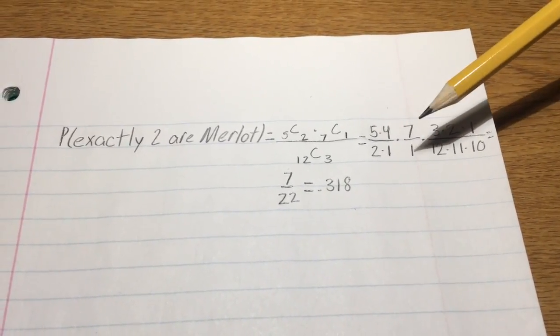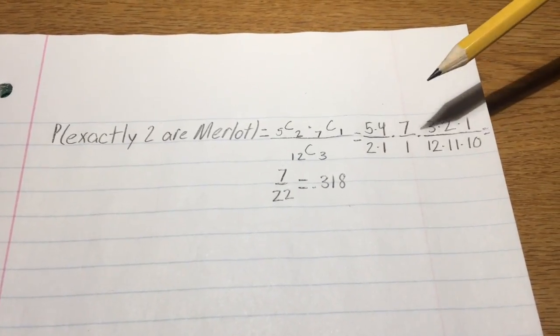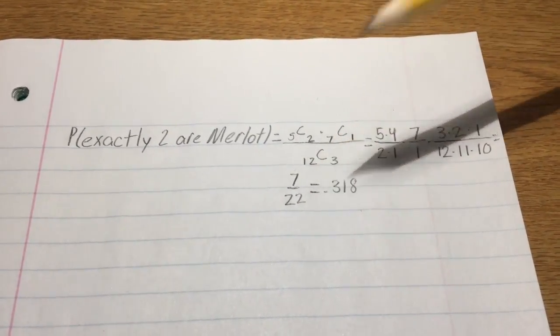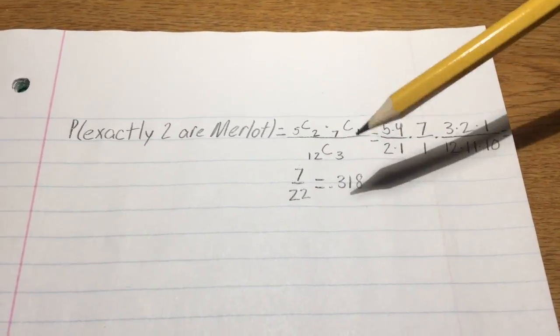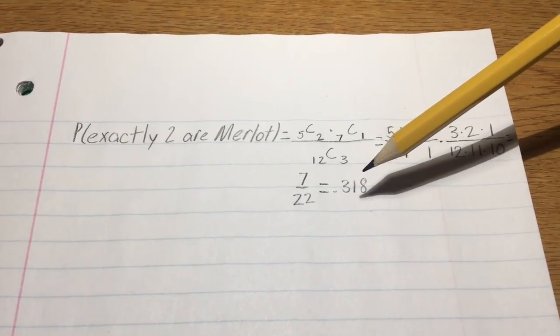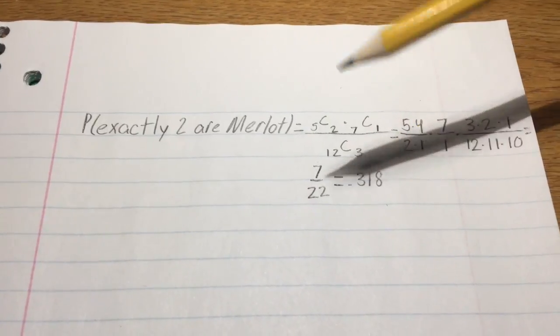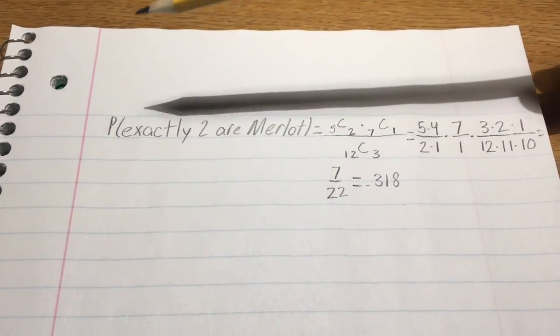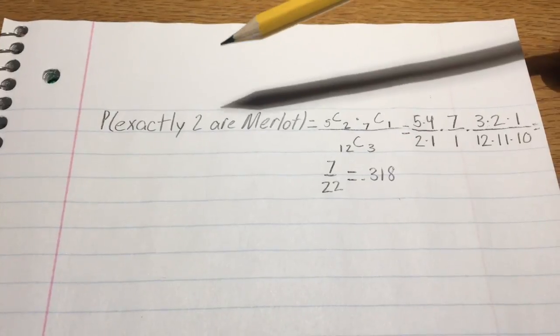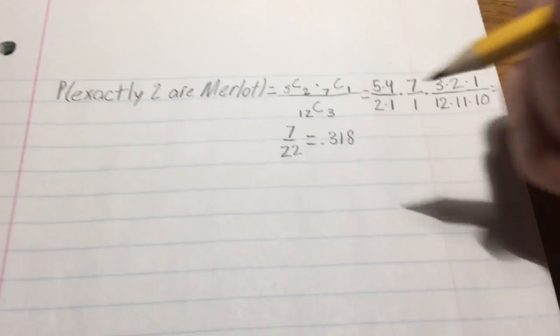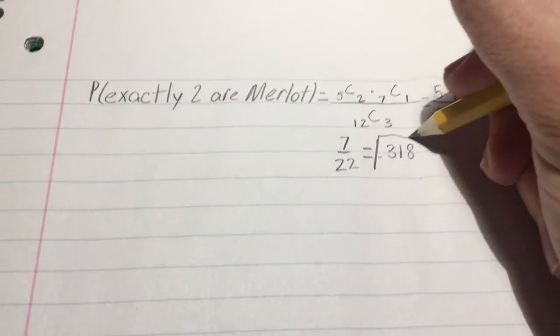Now, if we were to plug this into a calculator, we would get the fraction of seven over 22, or as it would actually be on a calculator, the decimal of 0.318. So for our final answer, the probability that exactly two of three randomly selected bottles would be Merlot is 0.318.